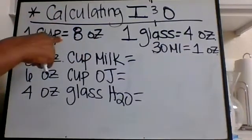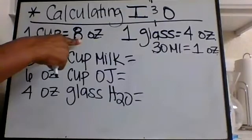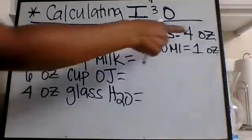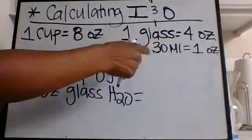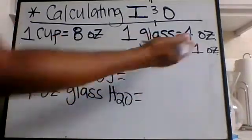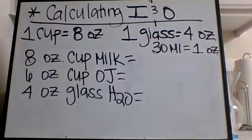Here are your conversions: one cup is equivalent to eight ounces, one glass is four ounces, and we know that 30 milliliters is equivalent to one ounce.